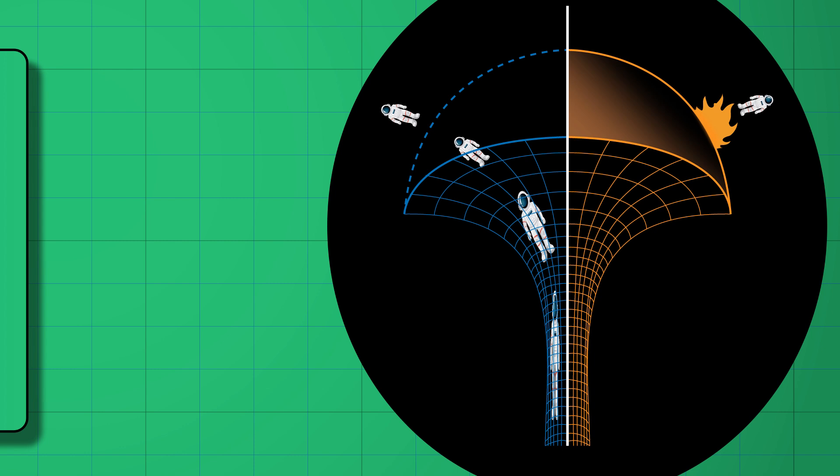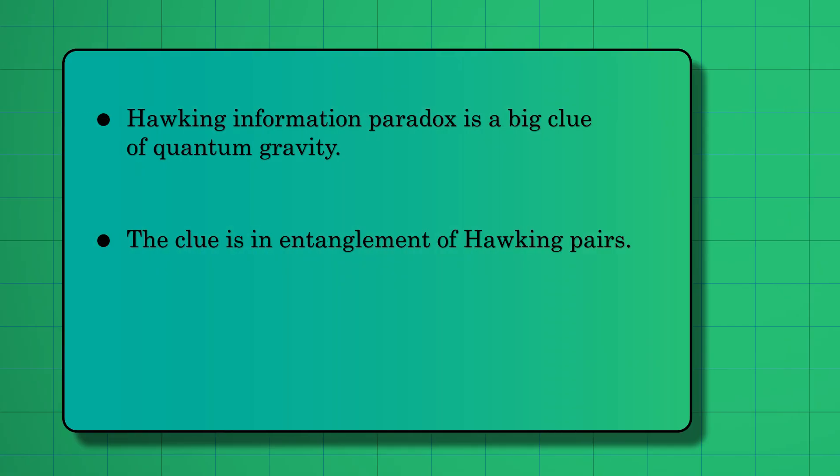These pairs' entanglement structure provides the Hawking paradox's sharpest formulation. In particular, Hawking showed that a black hole formed from a pure state goes to a maximally mixed final state. This behavior is against the rules of quantum mechanics.